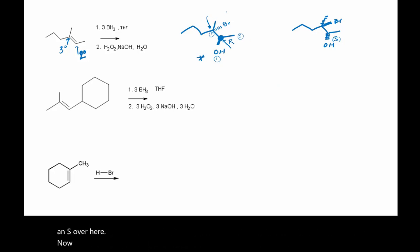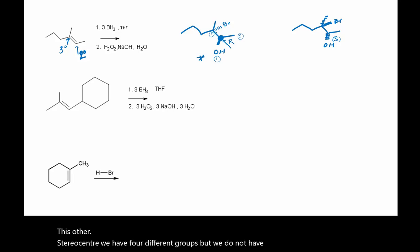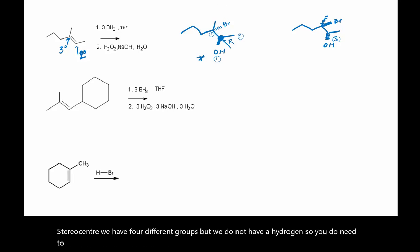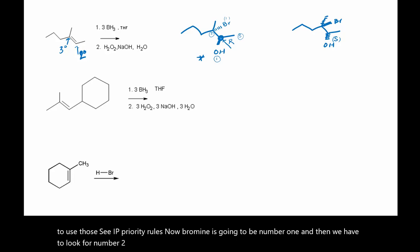Now this other stereocenter — we have four different groups, but we do not have a hydrogen, so you do need to use those CIP priority rules. Now bromine is going to be number one. Then we have to look for number two. If I move down here, I have a CH and I have a CH₂. That means this group is going to be number two.